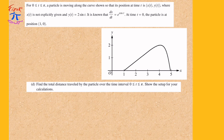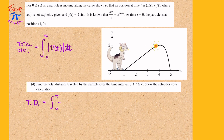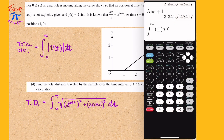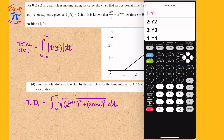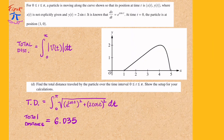Part d: find the total distance traveled by the particle over the interval from 0 to pi. Total distance requires the integral from 0 to pi of the absolute value of the velocity. The magnitude of the velocity is the square root of x prime squared plus y prime squared, so we use that as our integrand. Using the calculator to evaluate this integral, the total distance traveled is approximately 6.035.